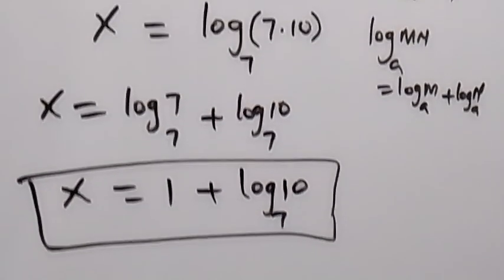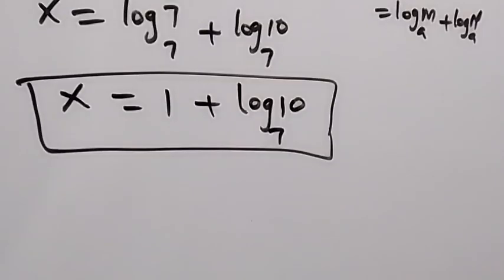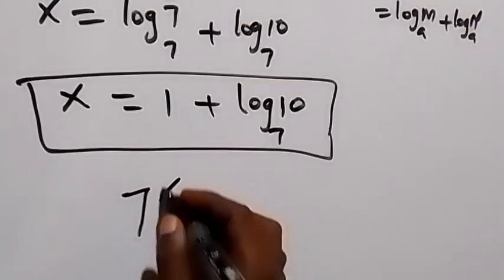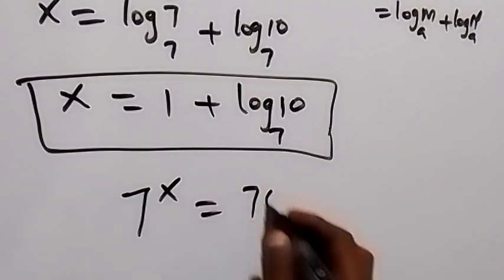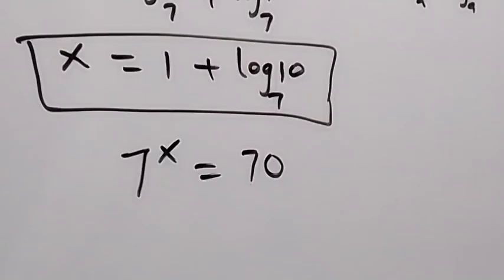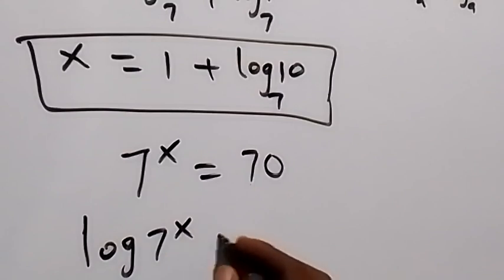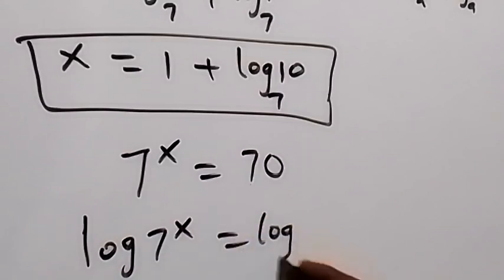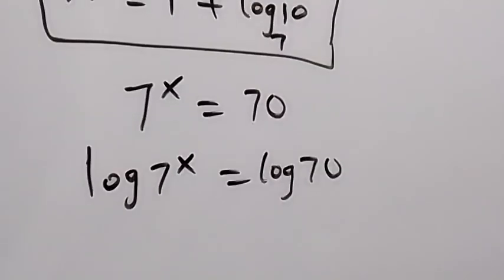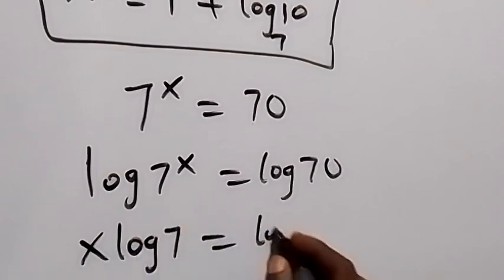And then also we can use another approach. We have 7 raised to power x equals to 70. We can take the log on both sides and this becomes log 7 raised to power x equals to log 70. And then applying power law, taking x to the back here, we have x log 7 which is equals to log 70.